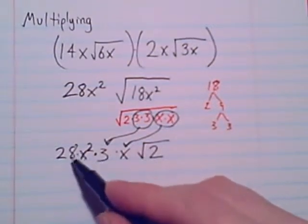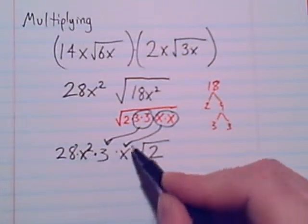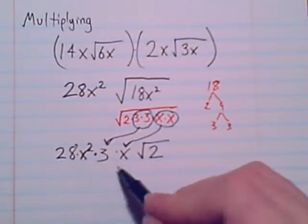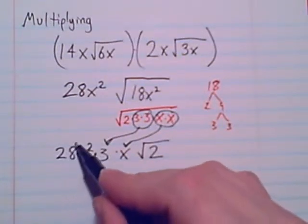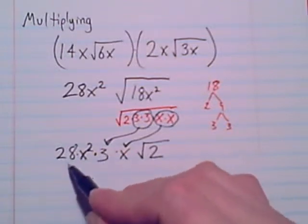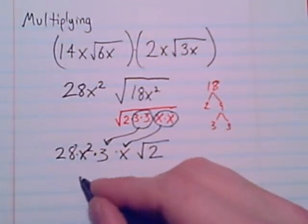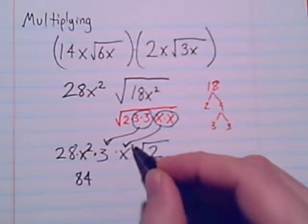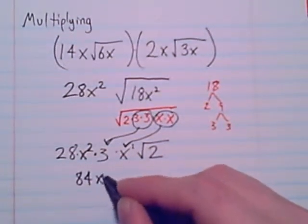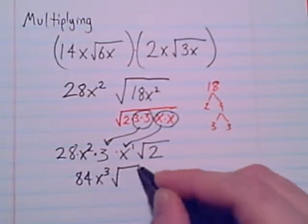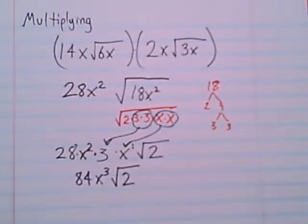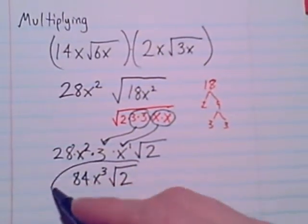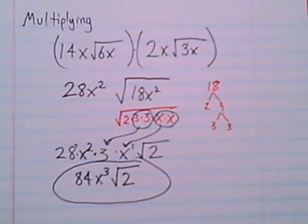Now don't be concerned about the way that this looks. Since it's all just being multiplied together, no adds and subtracts, I can do things in any order. So I can do the 28 times the 3 is, oh boy, 84. And x squared times 1 more x, there's x to the 3rd, with radical 2. So there's our answer, 84x to the 3rd, radical 2.